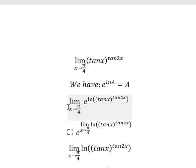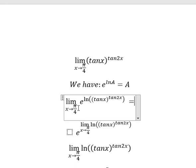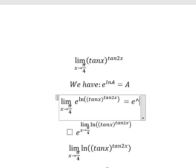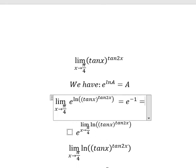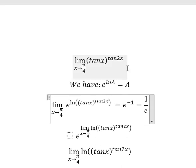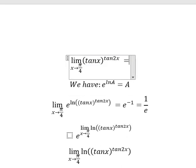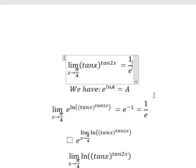So now we go back in here. When x approaches π/4, this one we have negative number 1. And we have 1 over e, so the value of this one we have 1 over e.